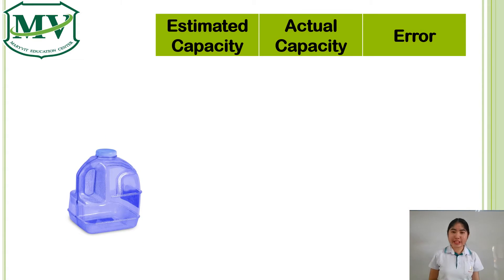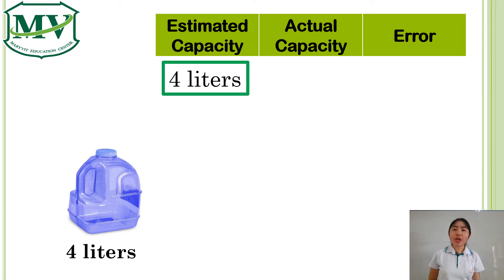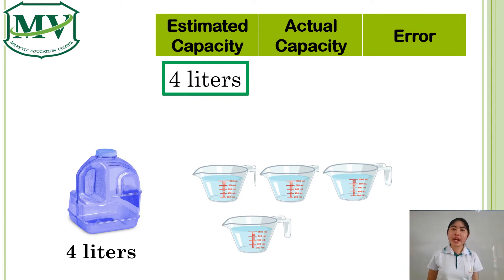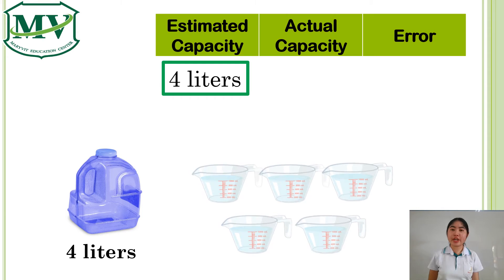Let's try with this container. We estimated that the capacity of this container is 4 liters. The water inside the container filled 1, 2, 3, 4, and 5 of these 1-liter measuring cups, which means that the actual capacity of the container is 5 liters.